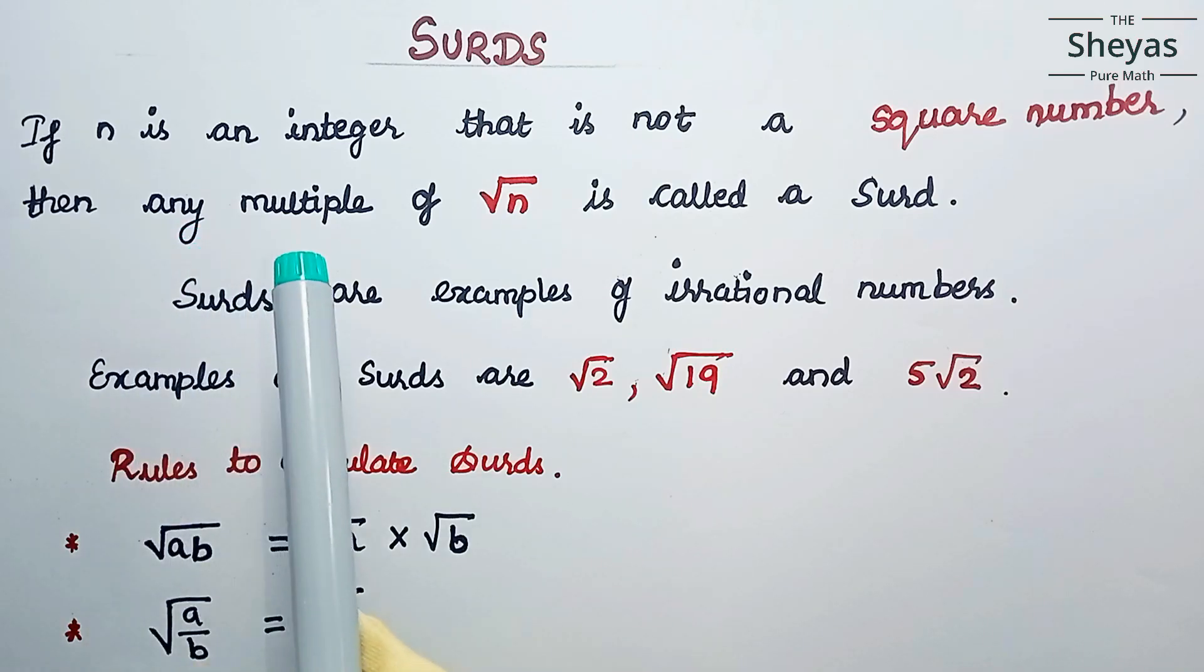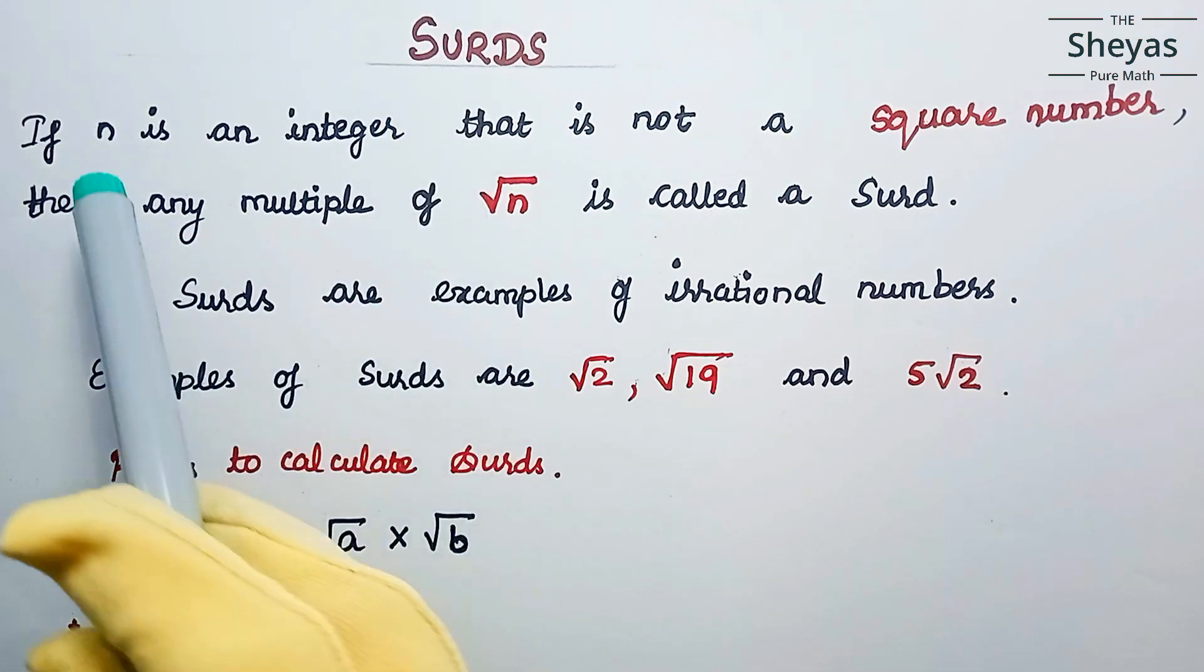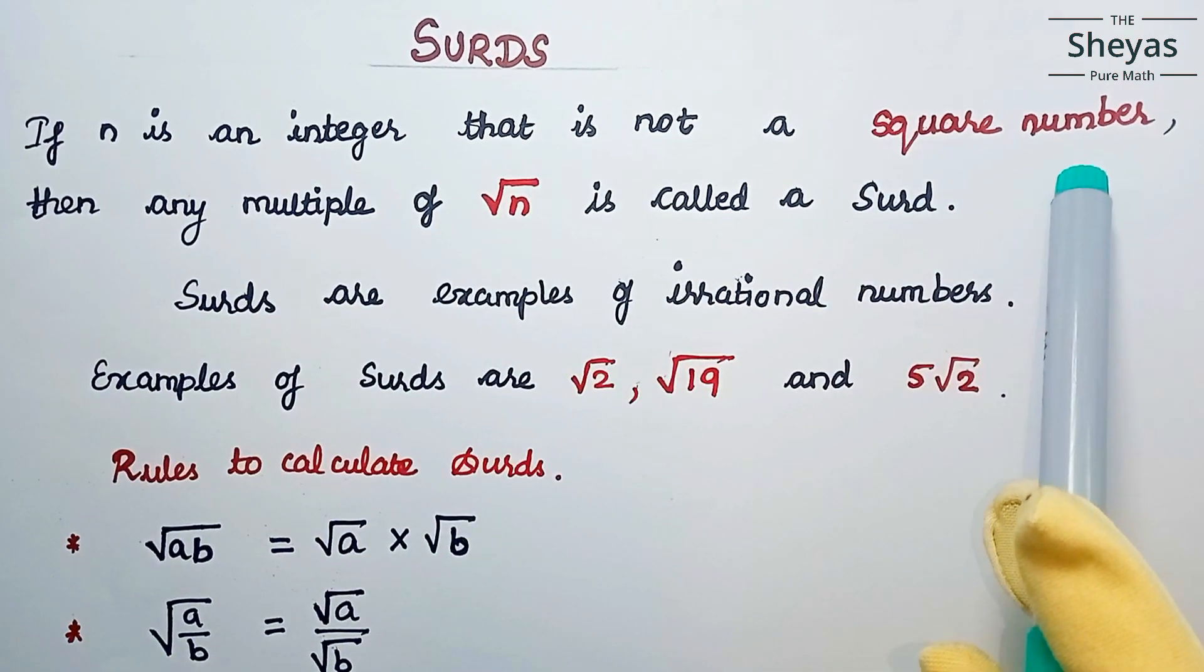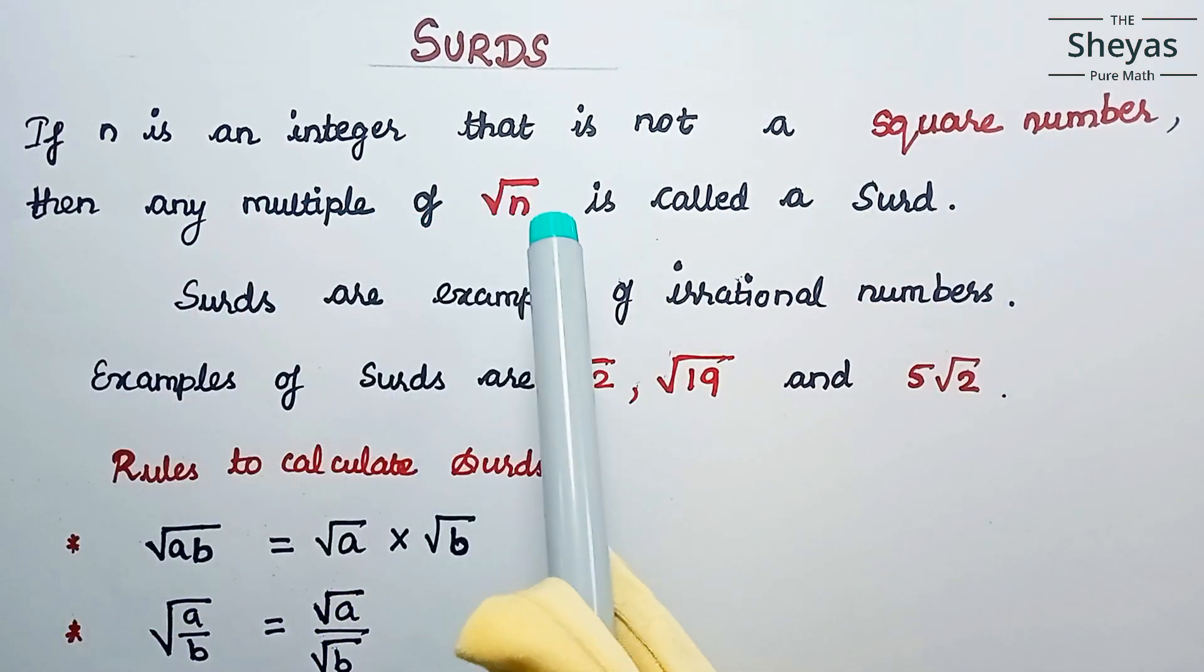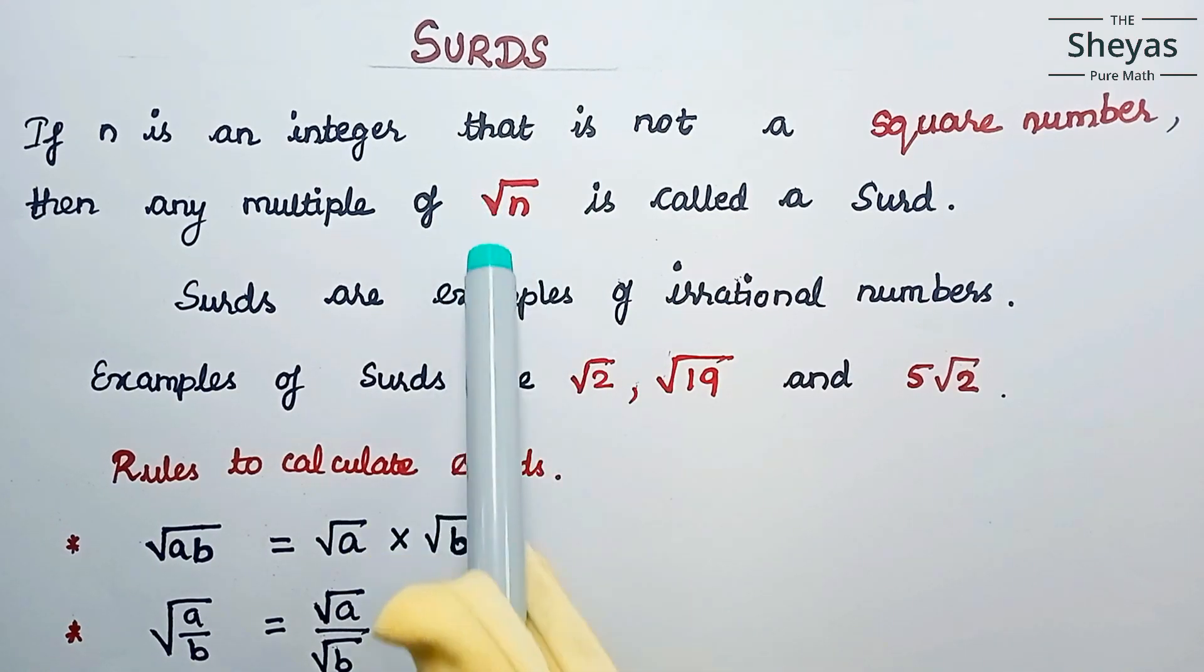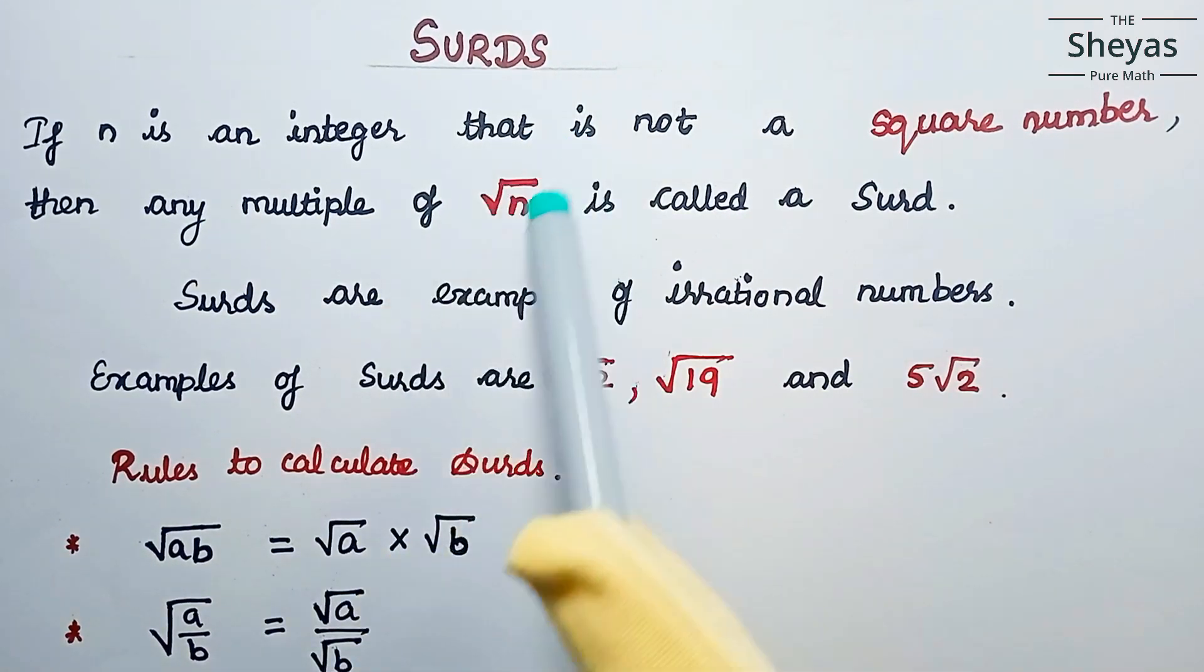Hi friends, today we are going to discuss surds. What is a surd? If n is an integer that is not a square number, then any multiple of root n is called a surd. Otherwise we can call this a radical n, the radical sign, or root n.